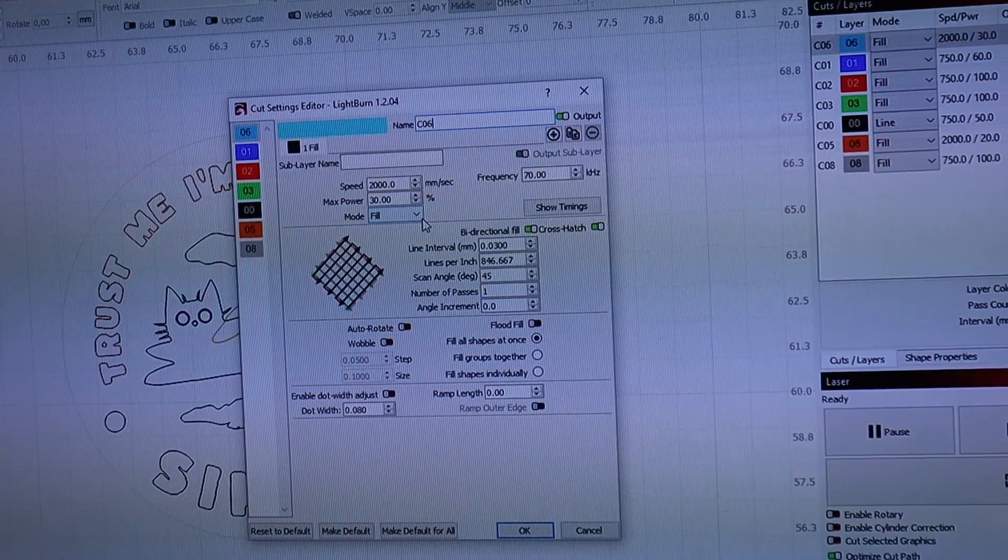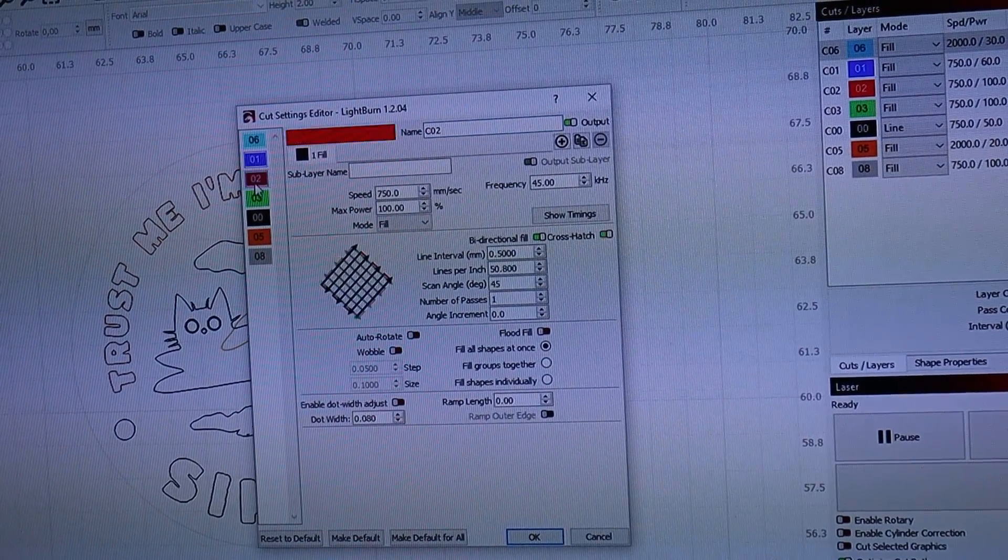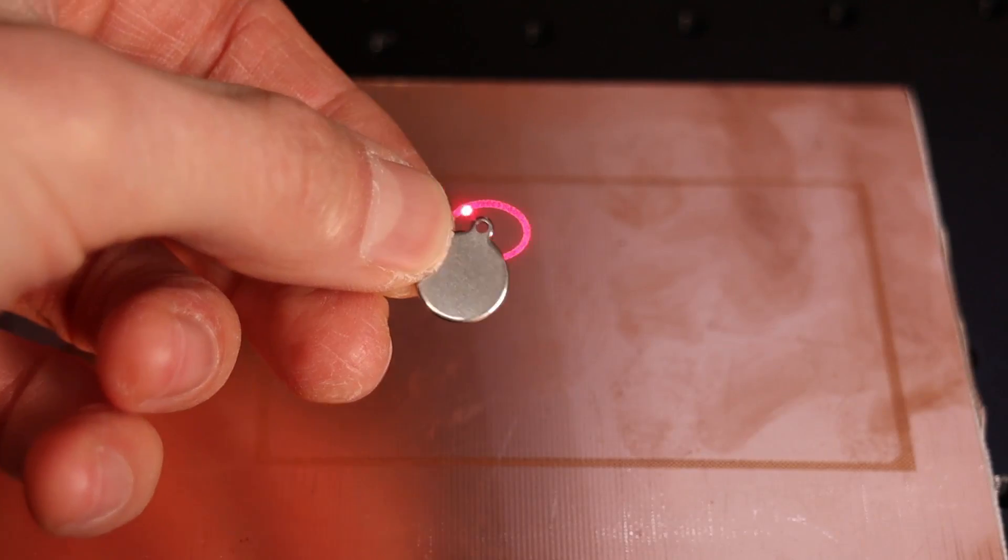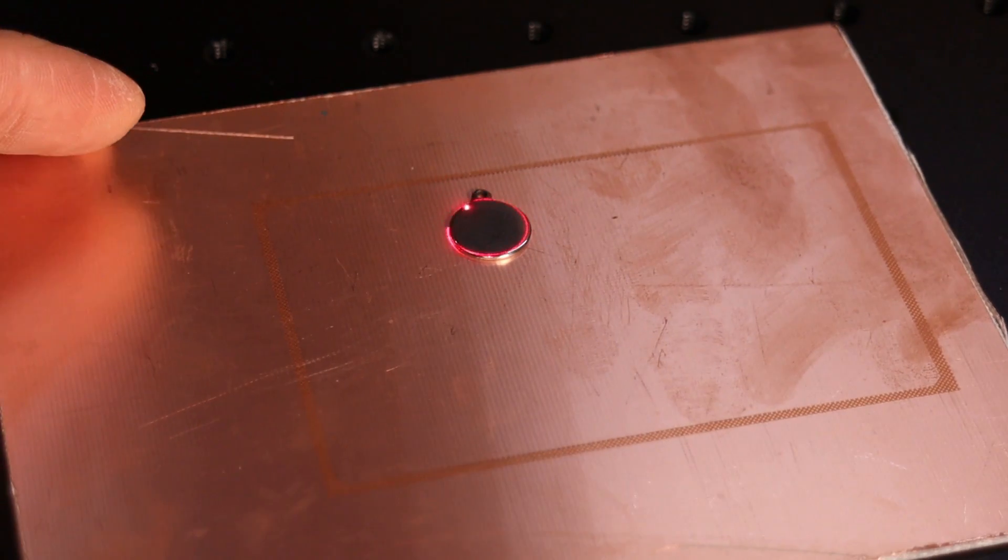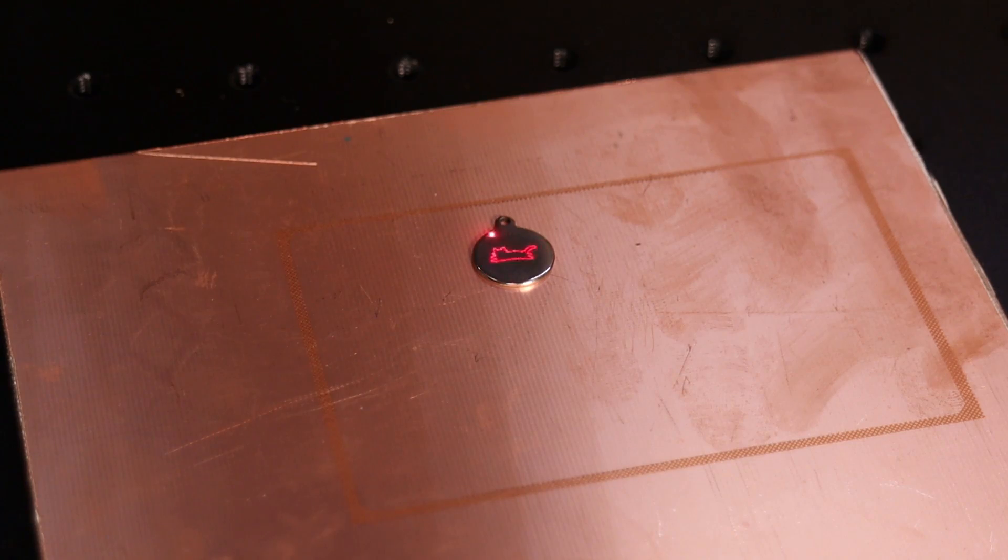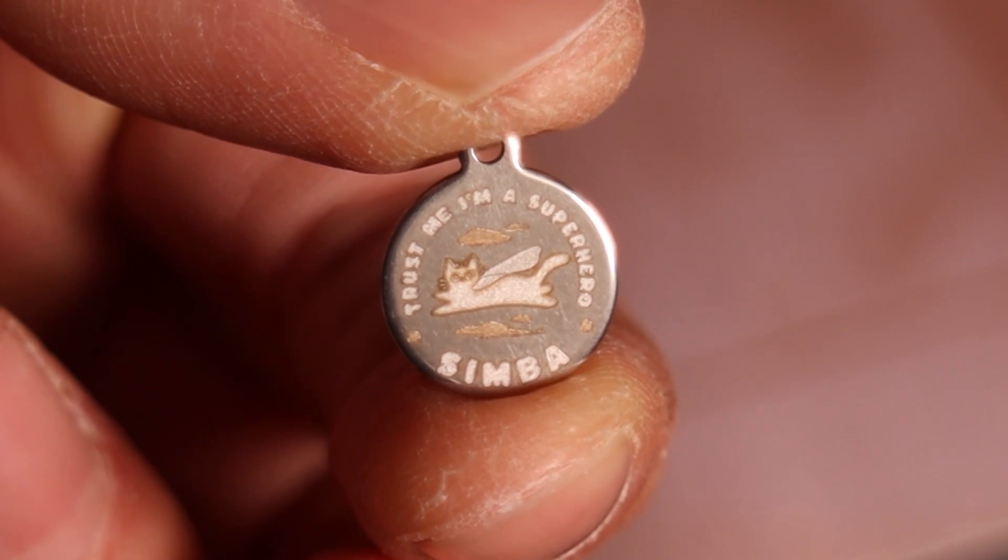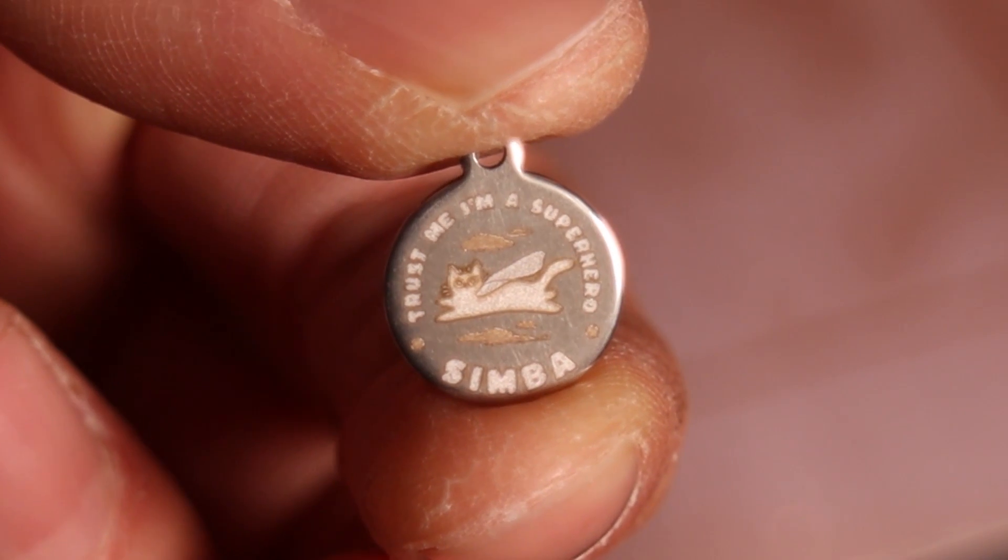With this cat tag, I set up a lot of layers, to get different colors of engravings. Thanks to the Comm Marker's small focus spot size, you can create very small stuff like this.